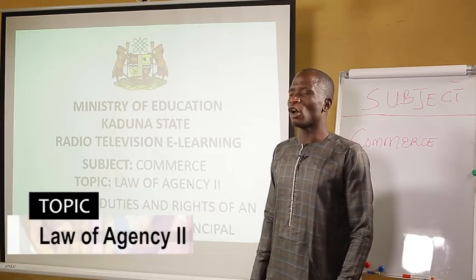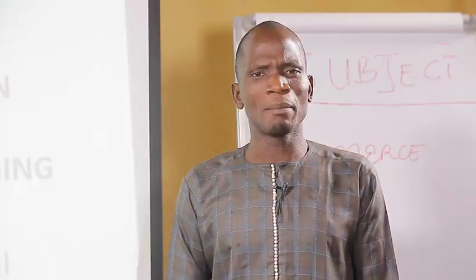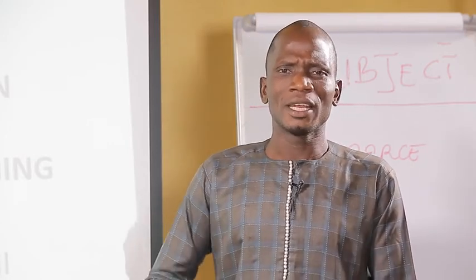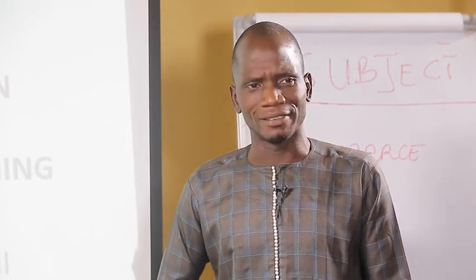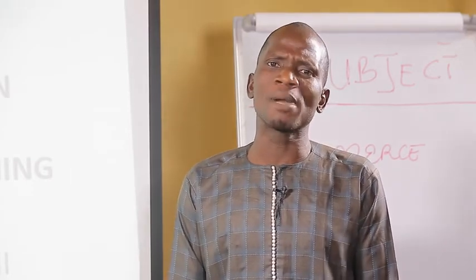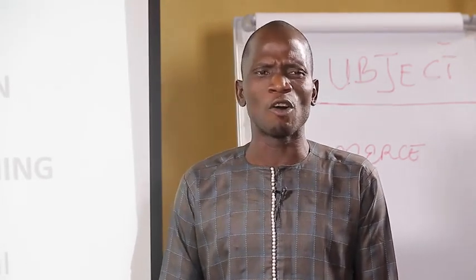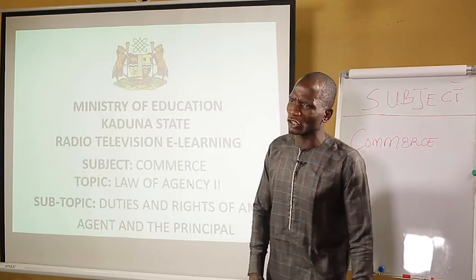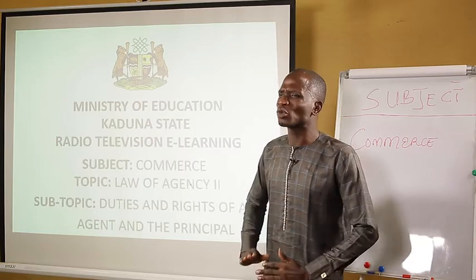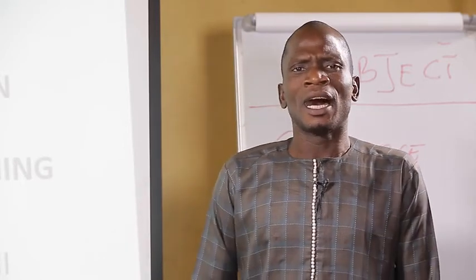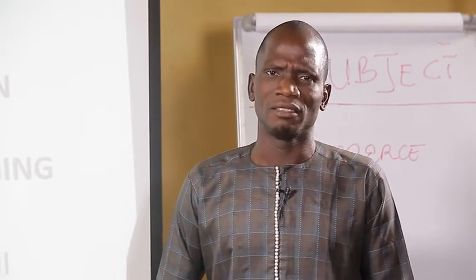Our today's topic is Law of Agency 2. Remember, in our previous lesson we have treated Law of Agency, and in that lesson we looked at the meaning of an agent, and we defined an agent as a person who is employed to work on behalf of another person, known as his principal. An agent performs the agency's services in the world of business. Therefore, by our definition, an agent is employed to work on behalf of someone known as his principal in the world of business.